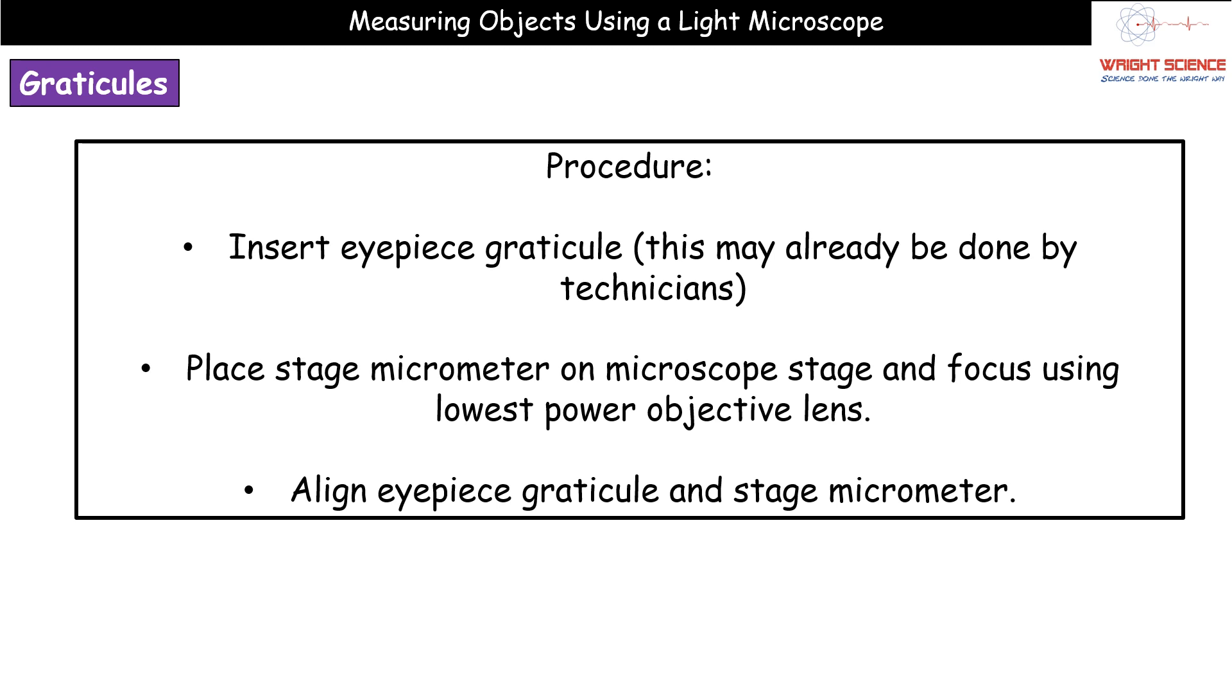So how do we do this calibration? Well first thing you need to put the eyepiece graticule into the eyepiece. Quite often in schools the technicians will have already done that for you. So you'll be presented with a microscope that when you look through the eyepiece there's already that little scale in there. Next thing we place our stage micrometer on the microscope stage and we focus it using the lowest power objective lens.